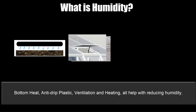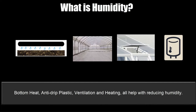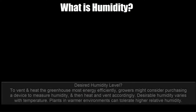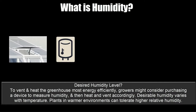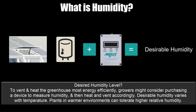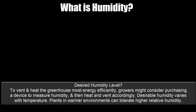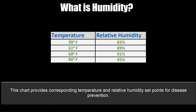The least expensive method is to keep the greenhouse dry, especially going into the night when the temperature drops. Weeds also contribute to high humidity by holding moisture in the leaf canopy and generating moisture through transpiration, so maintain well-drained greenhouse floors that are free from weeds. Bottom heat, anti-drip plastic, ventilation and heating all help with reducing humidity. To vent and heat the greenhouse in the most energy efficient way, growers might want to purchase a device to measure humidity and then heat and vent accordingly. The desirable humidity varies with temperature — plants in warmer environments can tolerate higher relative humidity. The chart provides corresponding temperature and relative humidity set points for disease prevention.